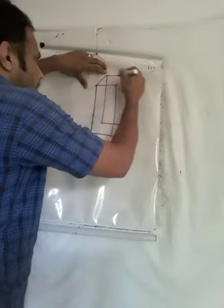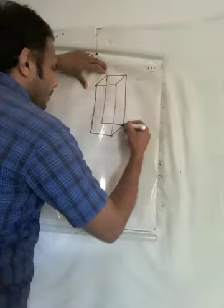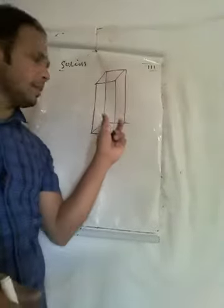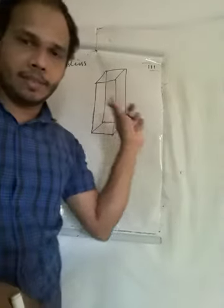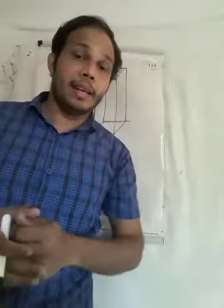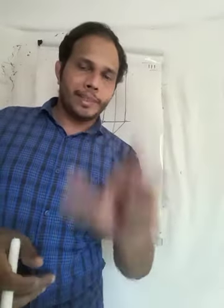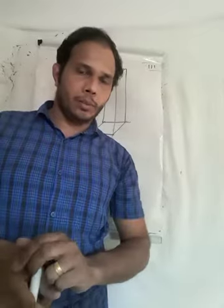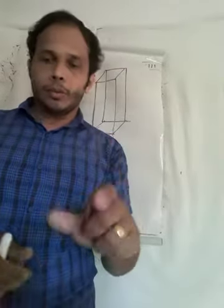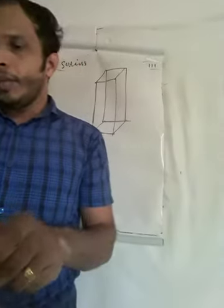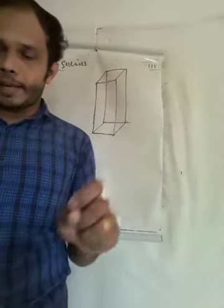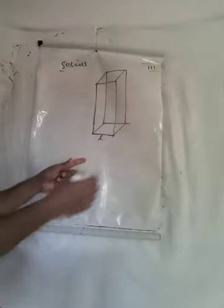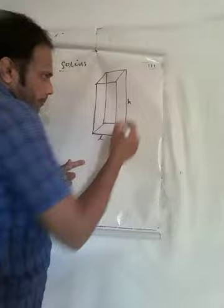This is a picture of a cuboid. This is the top face, this is the bottom face, these are the lateral faces. If you look at page number 180, this is L — length, breadth, height.